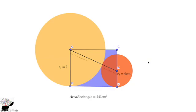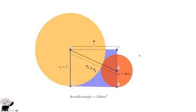We can represent the segment AC as x. Now for CK: we know the radius of the bigger circle is r1 and the radius of the smaller circle is r2, so CK equals r1 minus r2 — that gives you this distance. We know this angle is 90 degrees, so we are going to use Pythagoras' theorem.